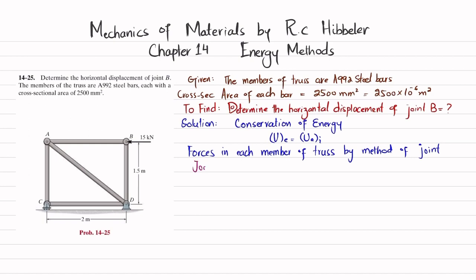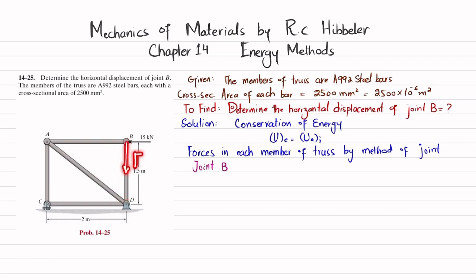We start at joint B. Due to the applied load, member AB will be in compression, exerting force FAB on point B in the horizontal direction. Similarly, member BD will elongate, applying force FBD on point B in the downward direction. Drawing the free body diagram of joint B: we have the 15 kN applied load, FAB acting horizontally, and FBD acting vertically downward.